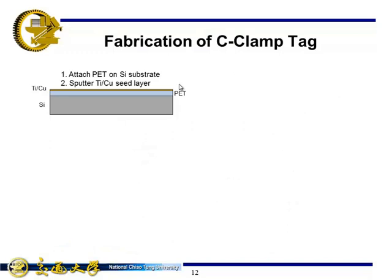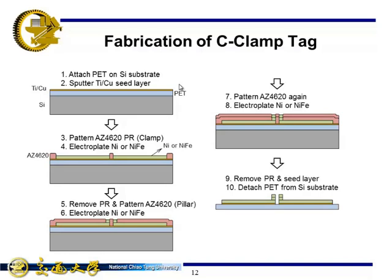The fabrication of the C-clamp tag is similar to the inductive coil tag. The difference is only electroplating the nickel. We have two kinds of magnetic material: nickel and nickel-iron.